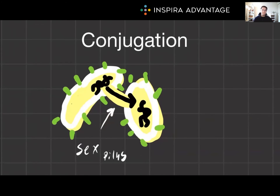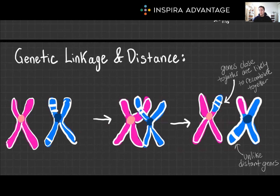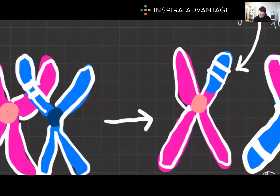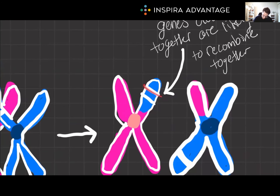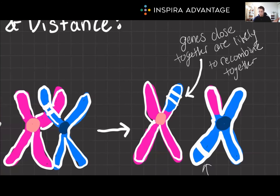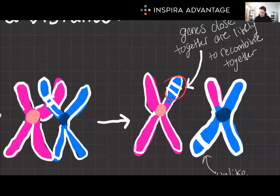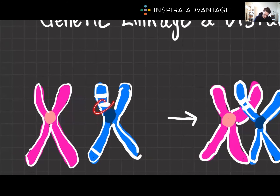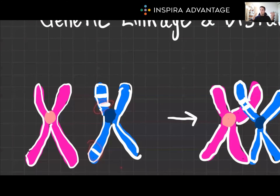Some relevant vocab for thinking in terms of chromosomes: genetic linkage and distance. The chances of genes being recombined during meiosis depends on their distance on the chromosome. Closer genes have a lower recombination likelihood, and this insight gave birth to centimorgans — a unit representing a 1% chance of recombination between genes. For example, two genes in white that are close together are likely to stay together after crossing over, while two genes far apart are very likely to end up on different chromosomes.